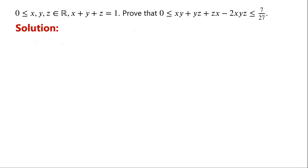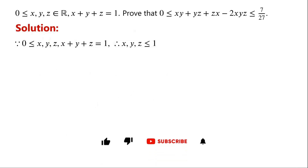We will prove the left side inequality first. Because x, y, and z are greater than or equal to 0, and x plus y plus z equals 1, so any of x, y, or z must be less than or equal to 1.